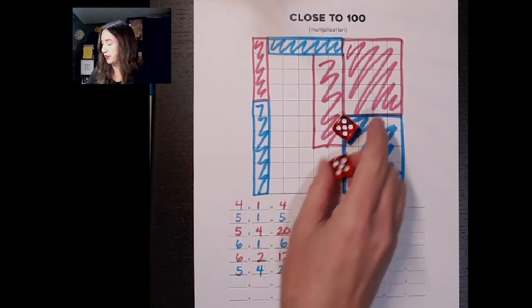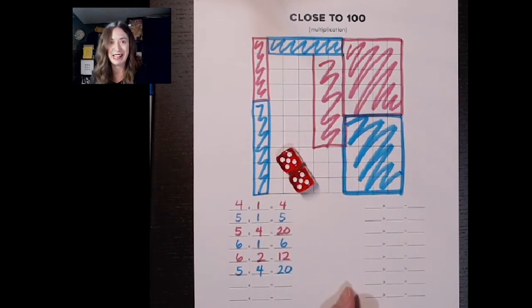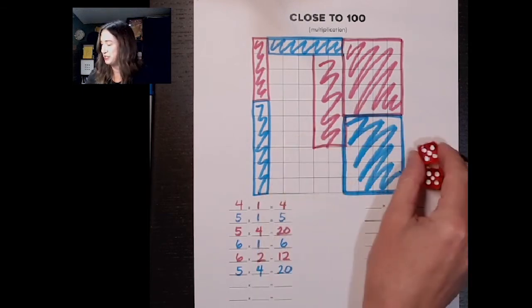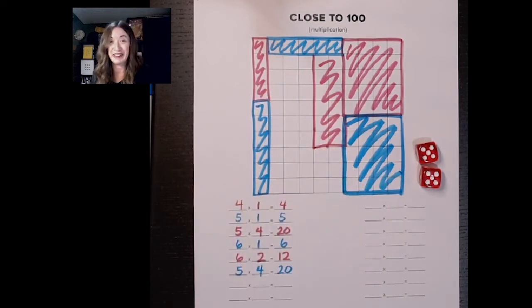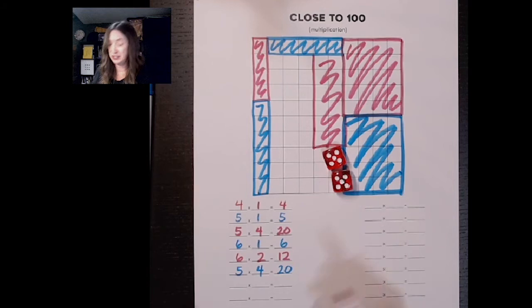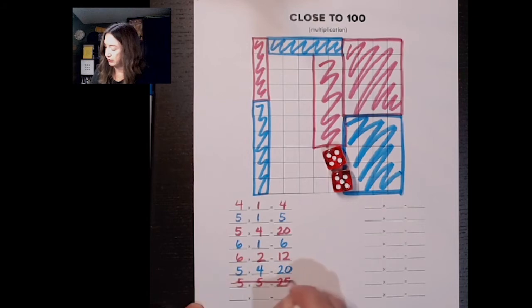Oh no. Pink got a 5 and a 5. Friends, do you see anywhere on here that's left that I could fit a 5 by 5 array? It's not. So pink is still going to write down 5 times 5 is 25 but is going to put a little line through it to show that we couldn't draw that.